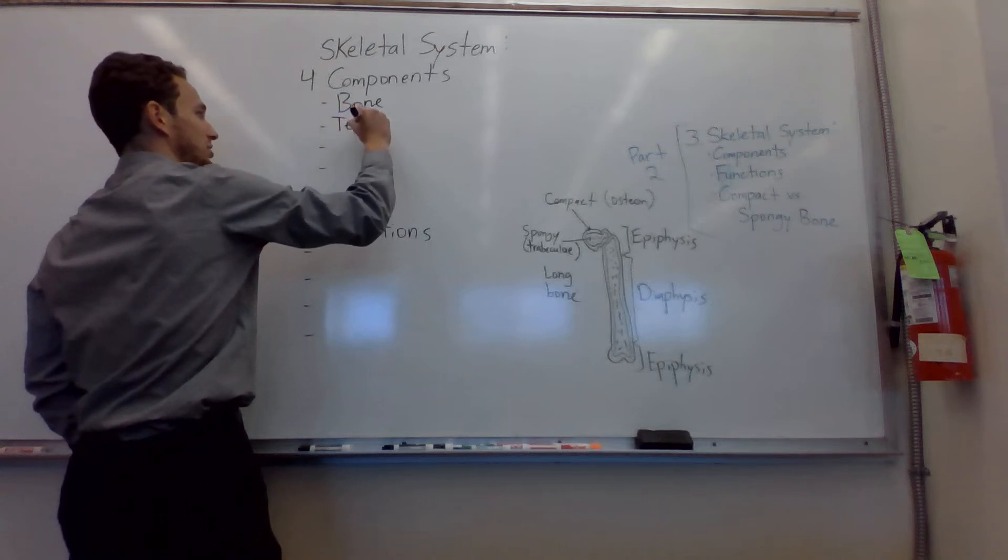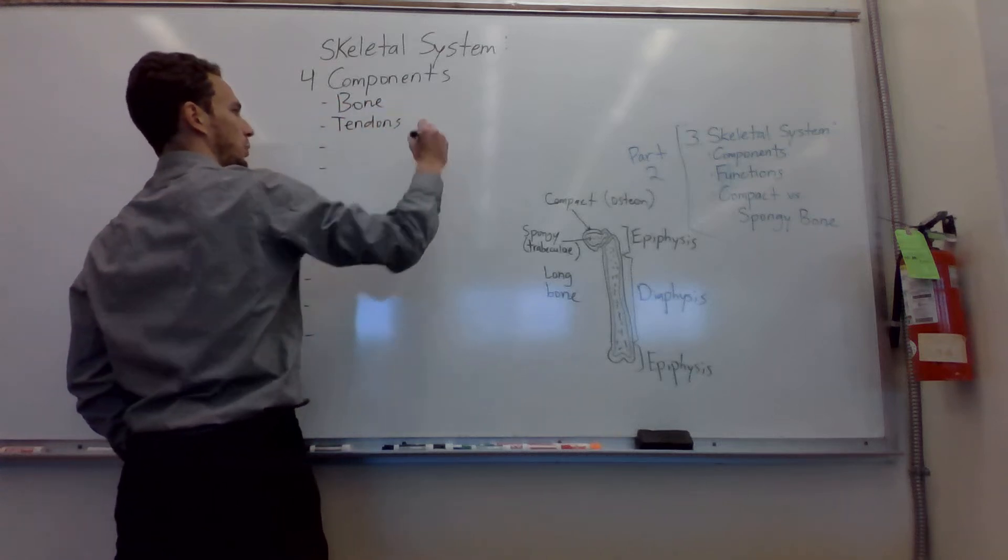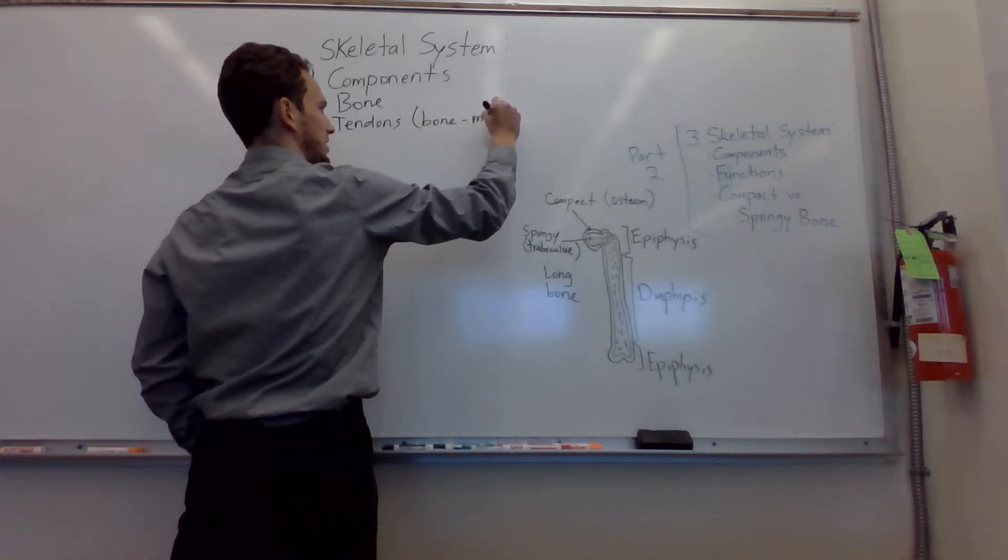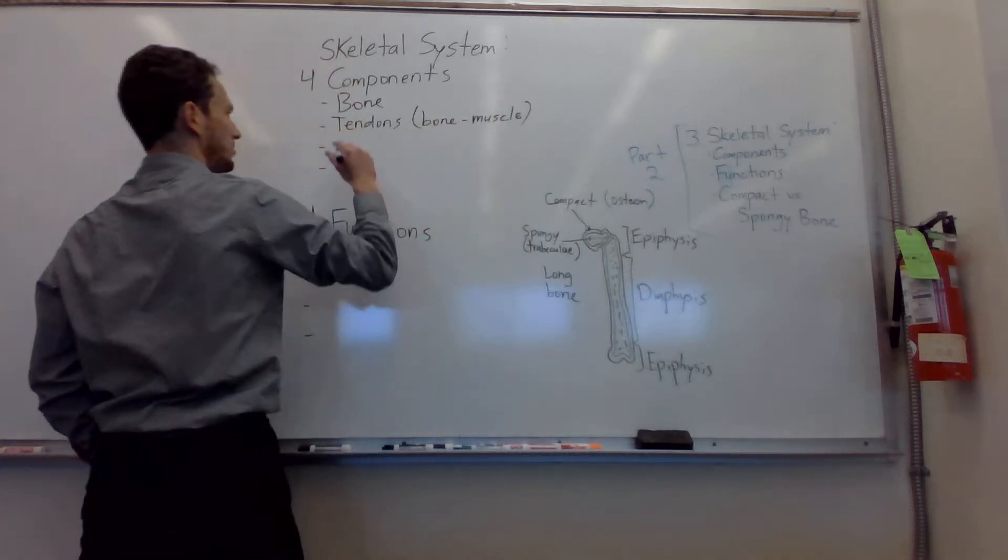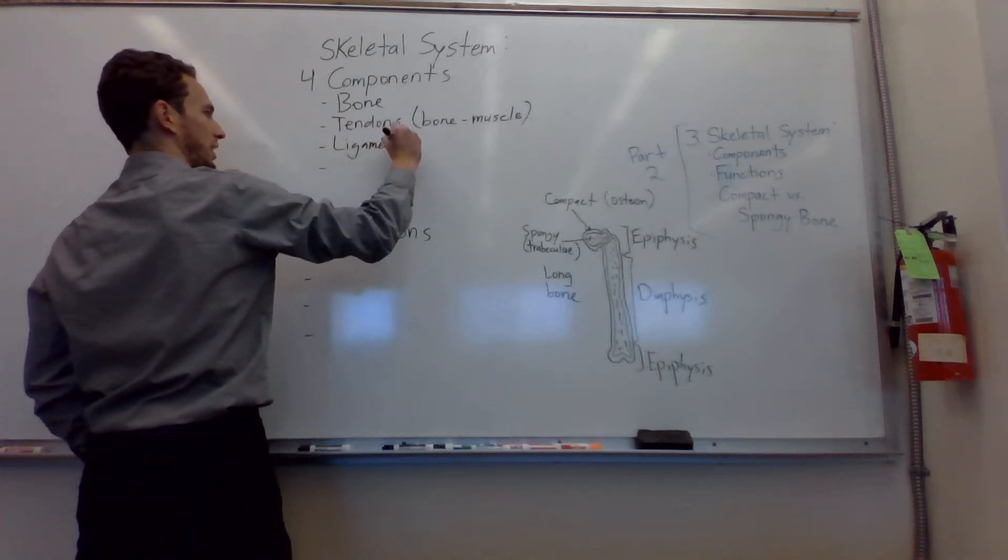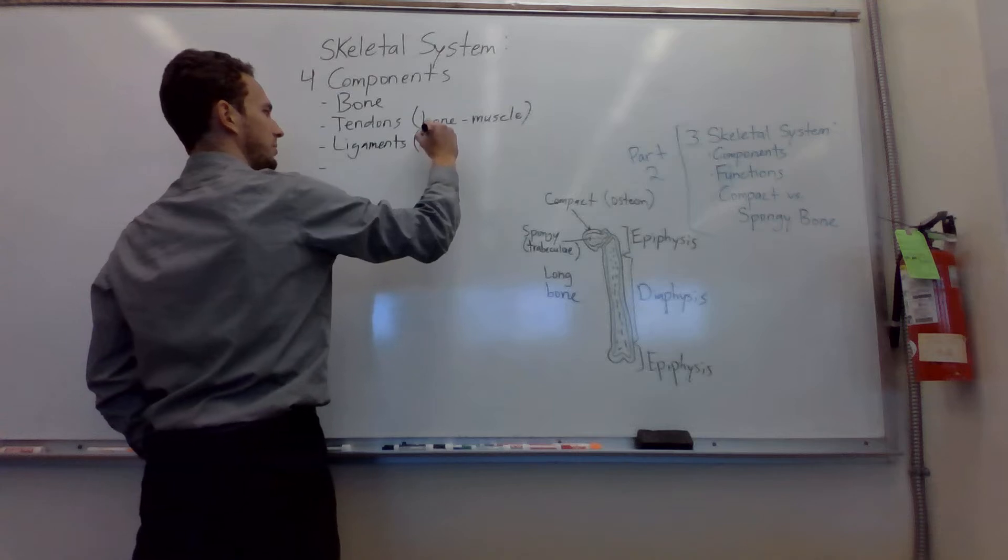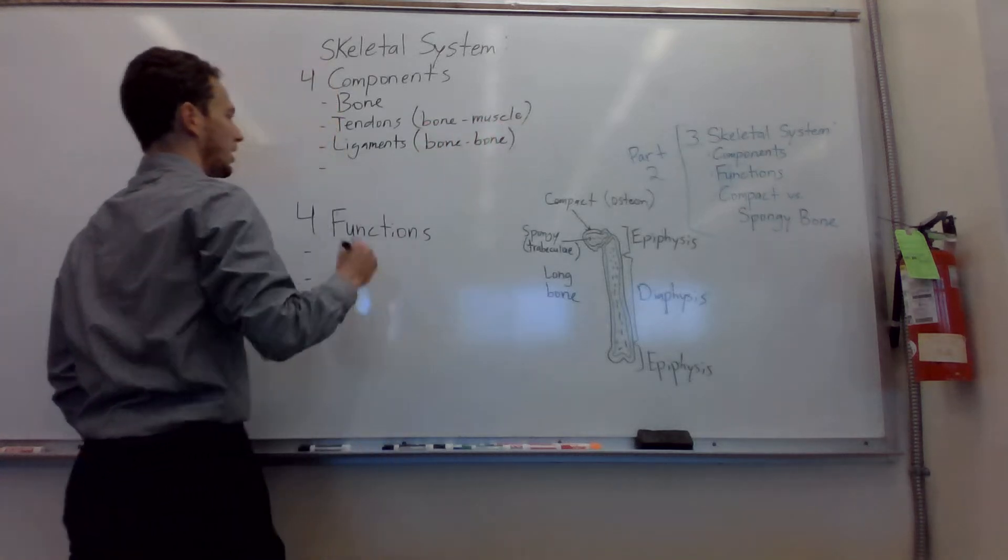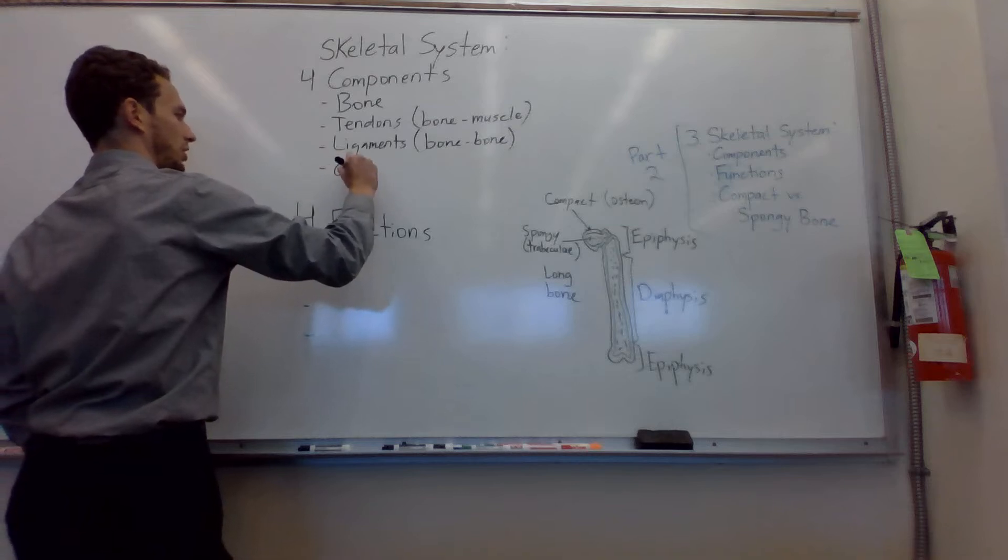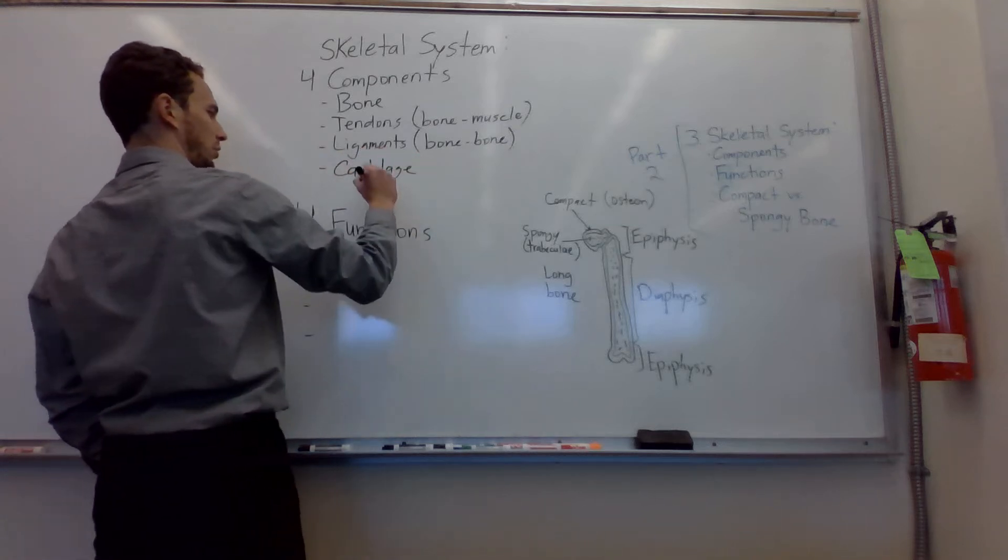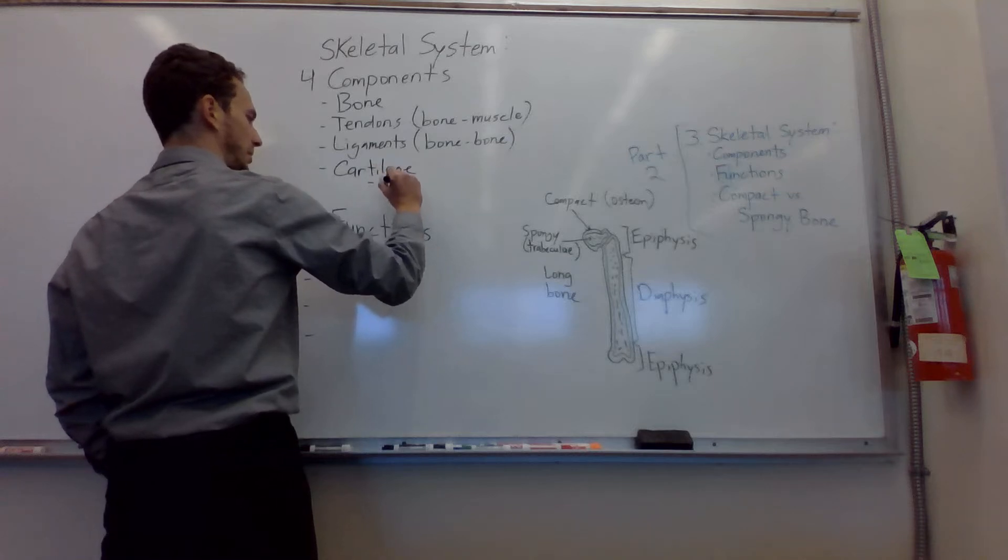Second one will be tendons, which will attach bone to muscle. This is a type of dense regular connective tissue. The next will be ligaments, which is also a type of dense regular connective tissue, but it's going to be connecting bone to bone. Lastly, we're going to talk about cartilage and there's three types of cartilage. I will briefly say they will be hyaline, which is the most common. So hyaline cartilage.